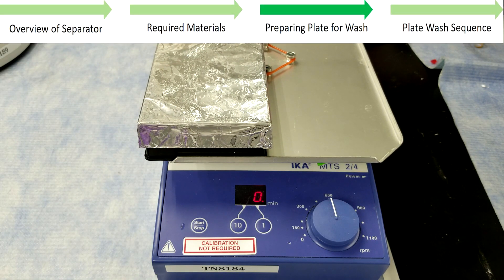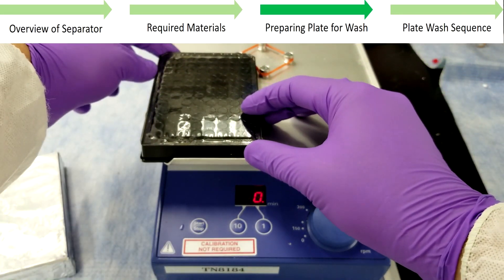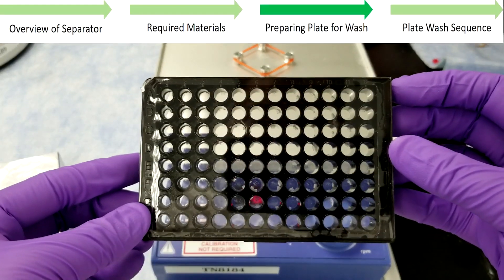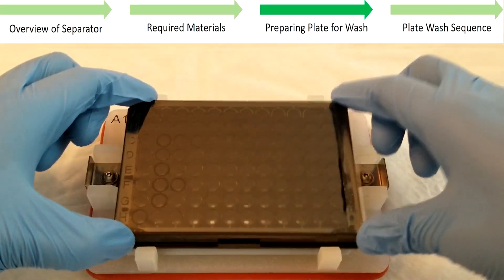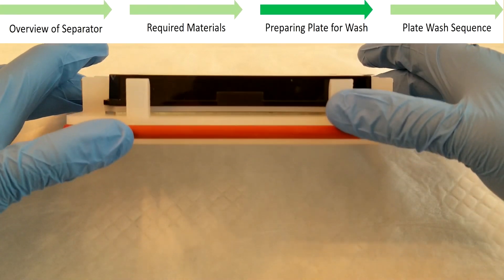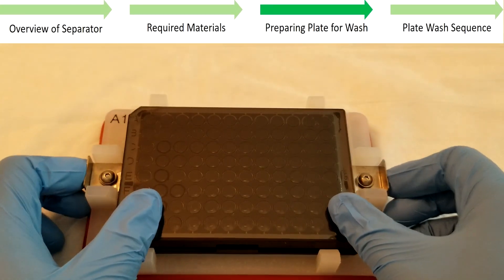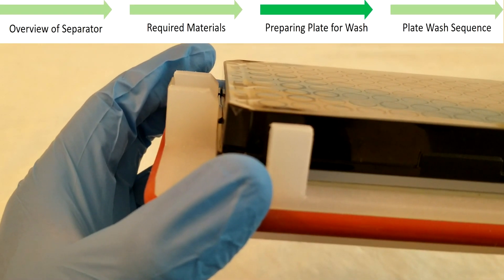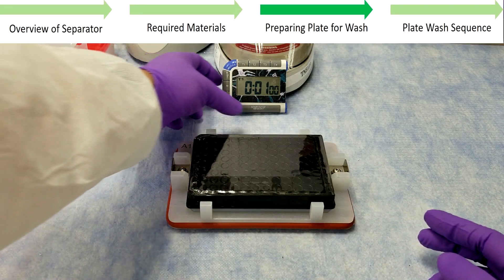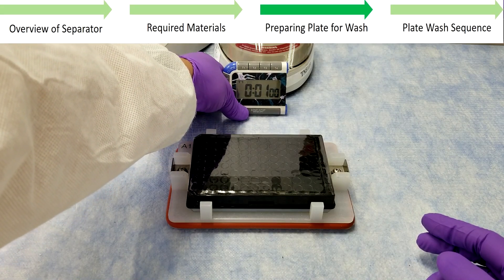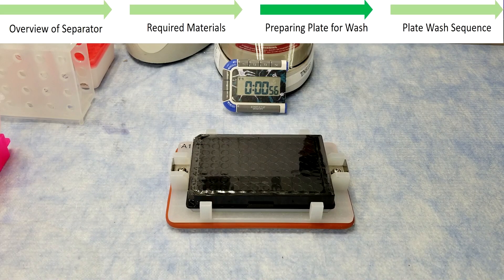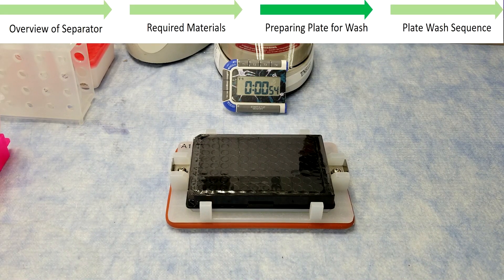To prepare the assay plate for wash, carefully remove it from the orbital shaker after its previous incubation is complete. Secure it onto the separator, ensuring that the plate is flat, both latches are locked, and that the lip of the plate sits below the latches. Incubate on the bench for at least 60 seconds to ensure that the beads are firmly held by the magnetic pins.